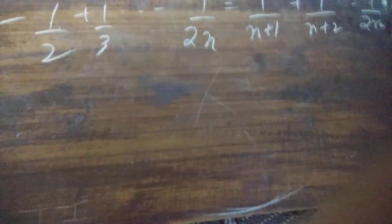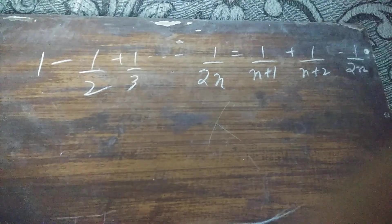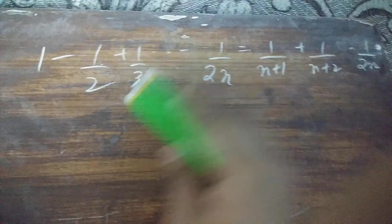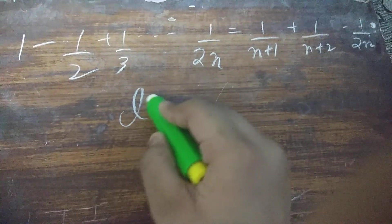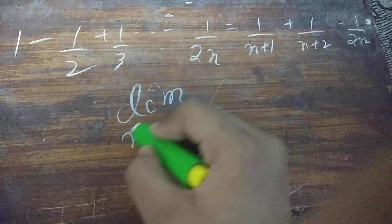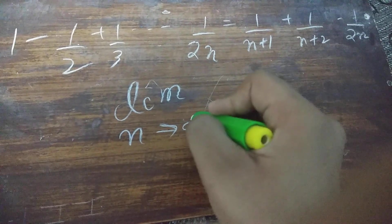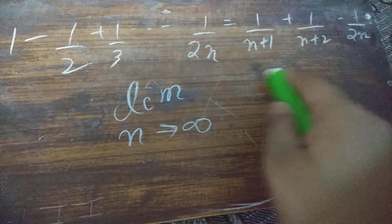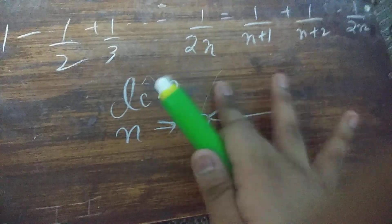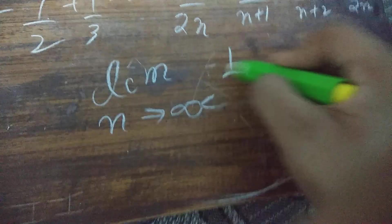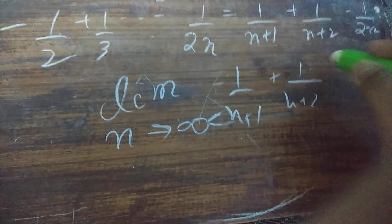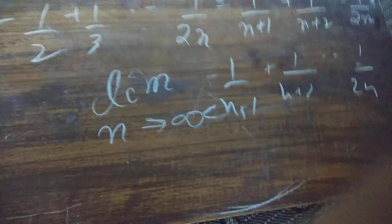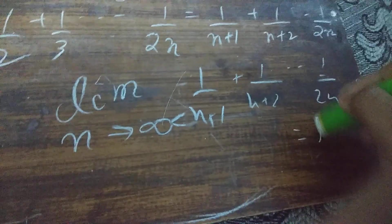Hello friends, today I am going to prove this theorem. The limit as n tends to infinity of the sum from 1/(n+1) to 1/(2n) equals ln(2).